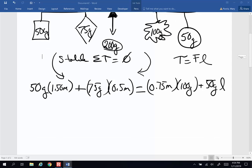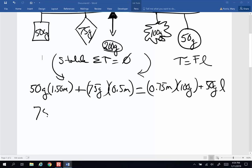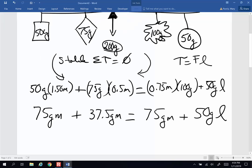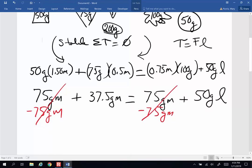All right, let's go ahead and do my math. One and a half of 50 is 75 gram meters. Half of 75 is 37.5 gram meters. 0.75 of 100 is 75 gram meters plus 50 grams L. Now I'm in a weird sort of situation here because of the fact that I have 75 on this side and 75 on that side. I can simplify this whole equation if I subtract 75 gram meters from both sides. If I do that, those cancel, essentially. And I'm going to end up with 37.5 gram meters equal 50 grams times L.